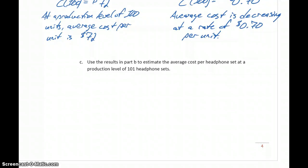Now we want to use the results in Part B to estimate the average cost per headphone set at a production level of 101 headphones. We can start with the 72 dollars that we came up with because that's the average cost at a production level of 100 units.